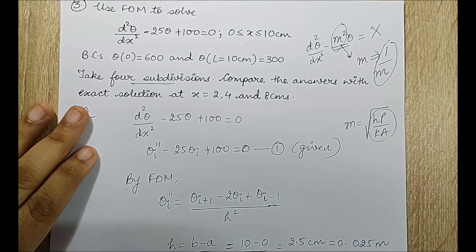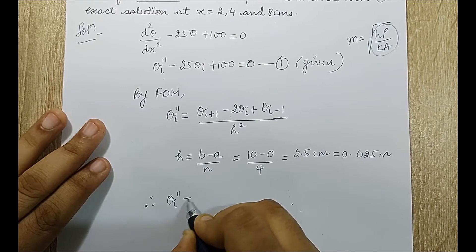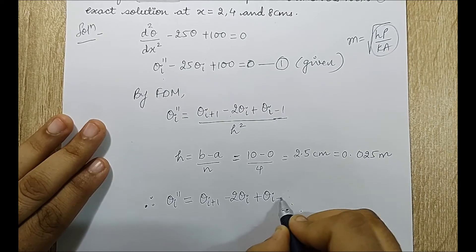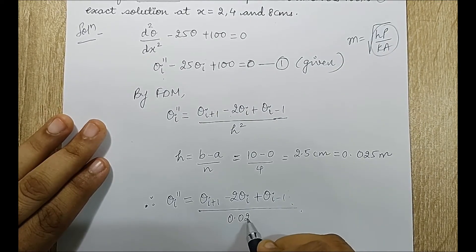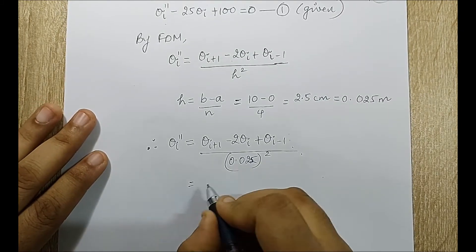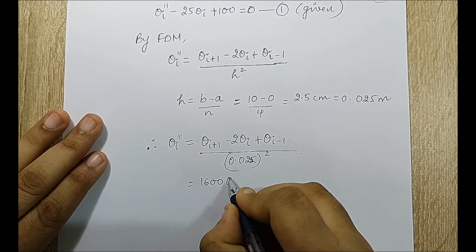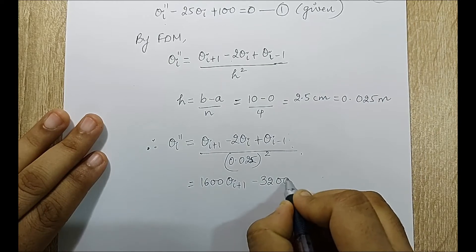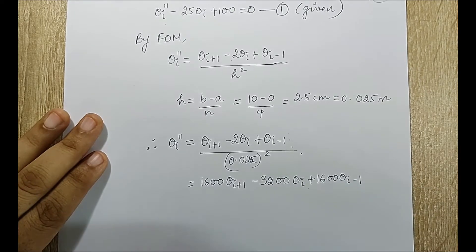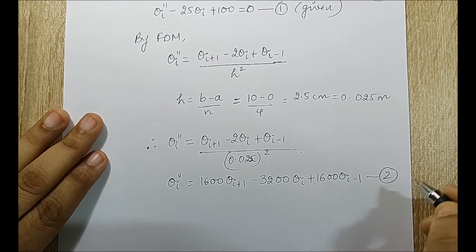Substituting into the FDM formula, theta_i double dash equals theta_{i+1} minus 2 theta_i plus theta_{i-1} upon 0.025 squared. Squaring 0.025 and taking the inverse gives 1600. Multiplying through: 1600 theta_{i+1} minus 3200 theta_i plus 1600 theta_{i-1}. This is equation 2 for theta_i double dash. I will substitute equation 2 into equation 1.